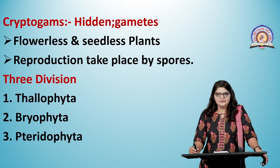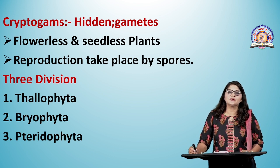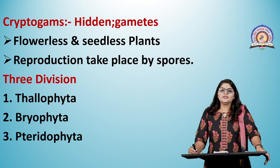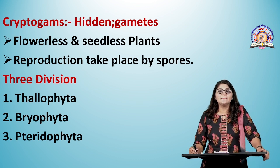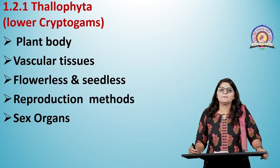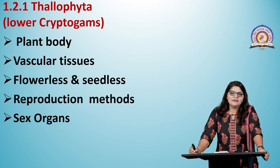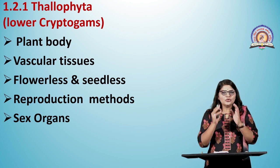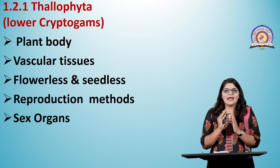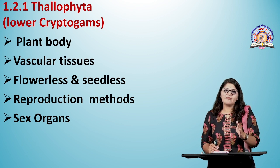Thallophyta, also known as lower cryptogames, has a thaloid plant body — meaning the plant body does not consist of stem, root, and leaves; these are absent. The plant body is very simple and thaloid. These plants do not have vascular tissue — xylem and phloem are completely absent in lower cryptogames. In higher cryptogames, xylem and phloem are present. Xylem conducts water and minerals, while phloem conducts food material.